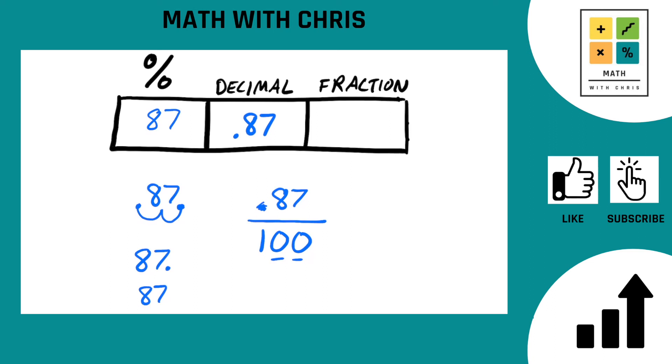So this is 87 over 100. And actually, 87 over 100 cannot be simplified. There's no way to simplify that further. That's our completed answer, our fraction: 87 over 100. And so there it is. We've converted 0.87 as a decimal into 87 percent and 87 one-hundredths as a fraction.